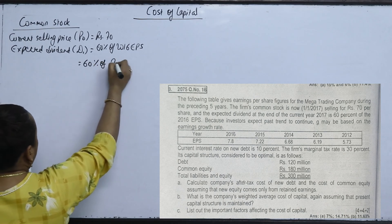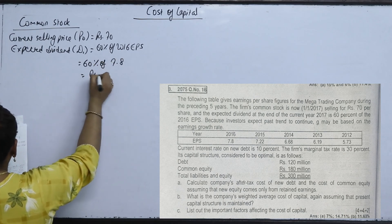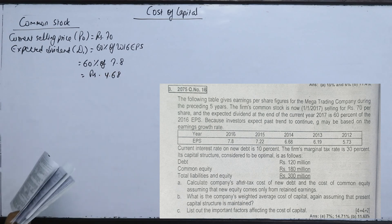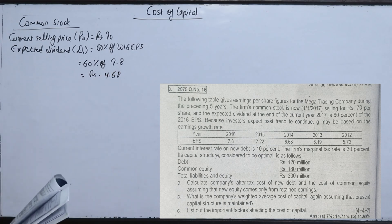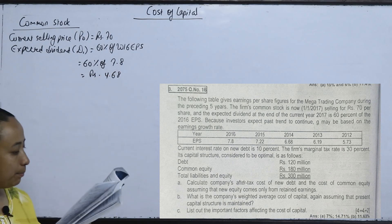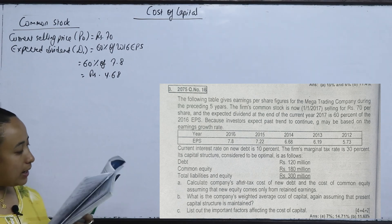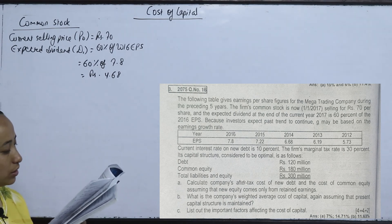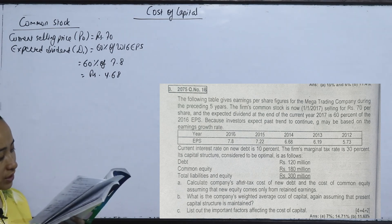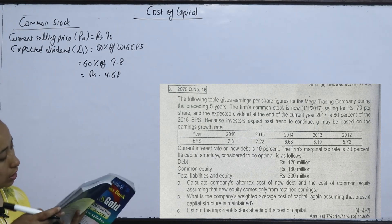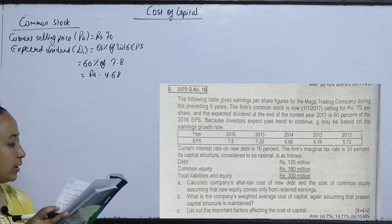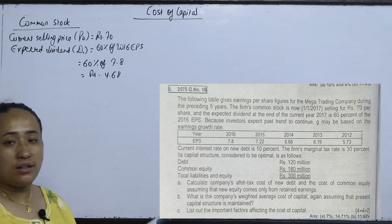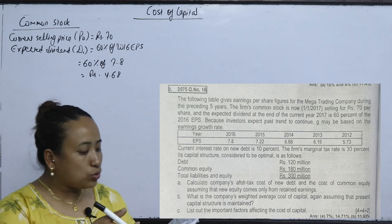EPS is 7.8, so D1 is 4.68. Investors expect the past trend to continue, so we calculate the earnings growth rate G based on historical data.